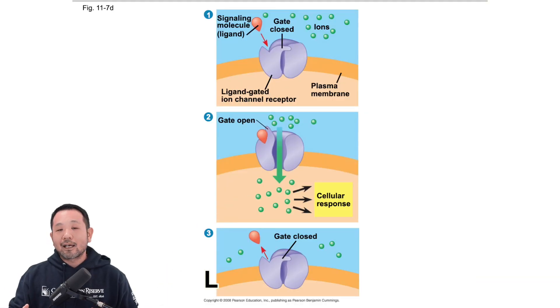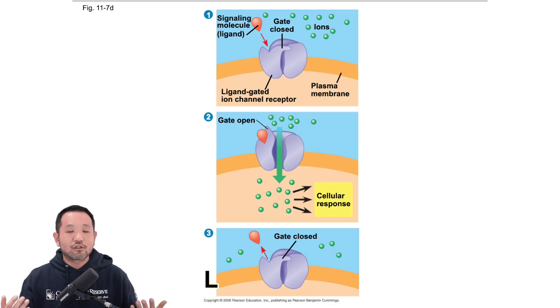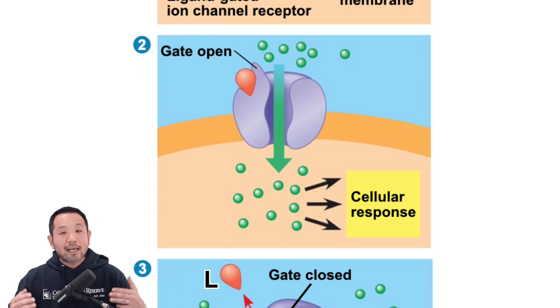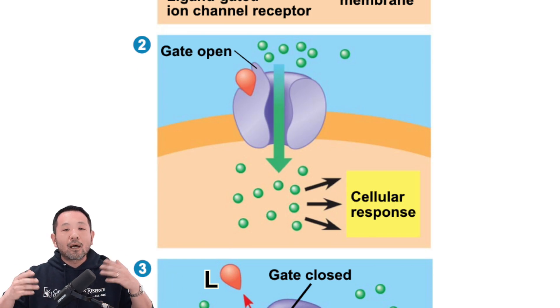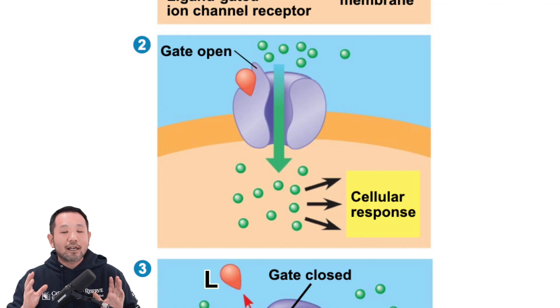The last receptor type is ligand-gated ion channels, which are receptors that double as channels. Channels are facilitated diffusion proteins that allow substances to move from high to low concentration across the cell membrane. When a ligand binds to a ligand-gated ion channel, it opens the channel, allowing the flow of ions such as sodium or calcium. This is less emphasized now that physiology has been removed from the AP Biology curriculum, so the emphasis going forward is on G-protein-coupled receptors.